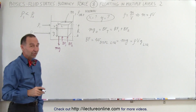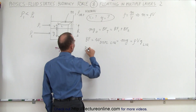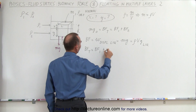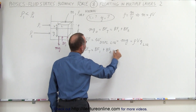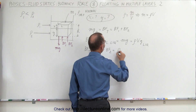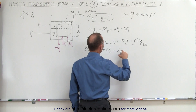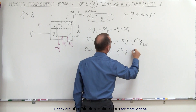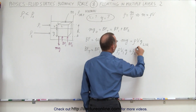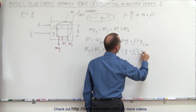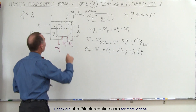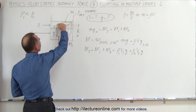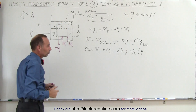Now in this case, since there are two layers, we can say that the total buoyancy force — which is equal to the sum of the two individual buoyancy forces — can be written as the density of liquid 1 times the volume of liquid 1 times g, plus the density of liquid 2 times the volume of liquid 2 times g. The volumes of 1 and 2 are simply the amount of liquid displaced by the object in layer 1 and in layer 2.